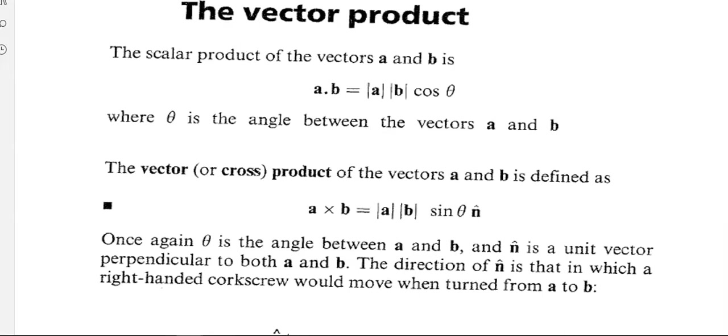In this video we're going to look at the vector product. The vector product is different from the scalar product. The scalar product gives you just a number or a scalar, but the vector product results in another vector.